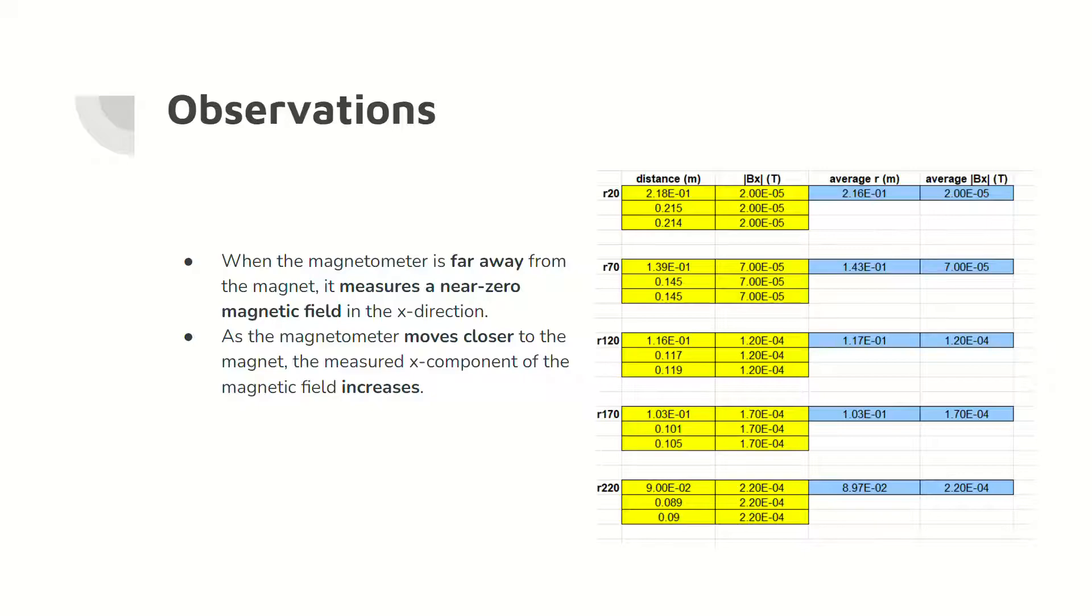The two main observations from the experimental portion of the lab are noted here. Importantly, the magnetic field increases as the distance between the magnet and observation point decreases.